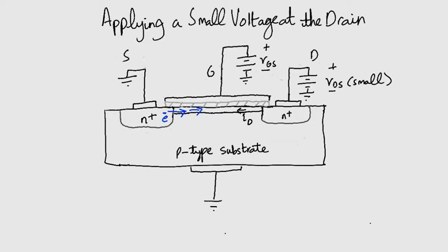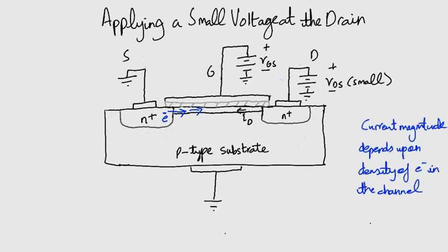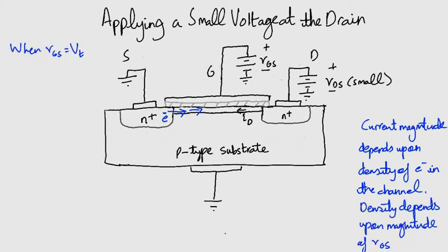The current magnitude depends on the density of electrons in the channel. The density depends on the magnitude of VGS. When VGS equals VT, the channel has negligible current.